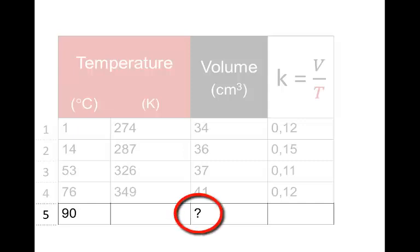So what would the volume reading be at a temperature of 90 degrees Celsius? First step we need to convert that 90 degrees Celsius into Kelvin because temperature and volume are only directly proportional when temperature is measured in the SI unit Kelvin. We add 273 we get 363.